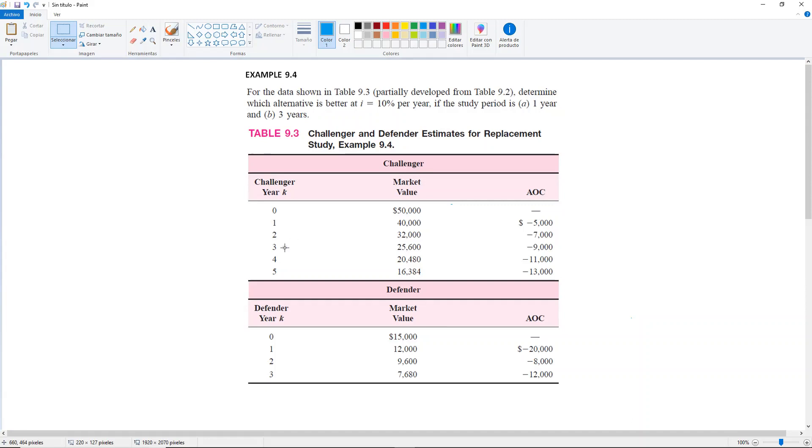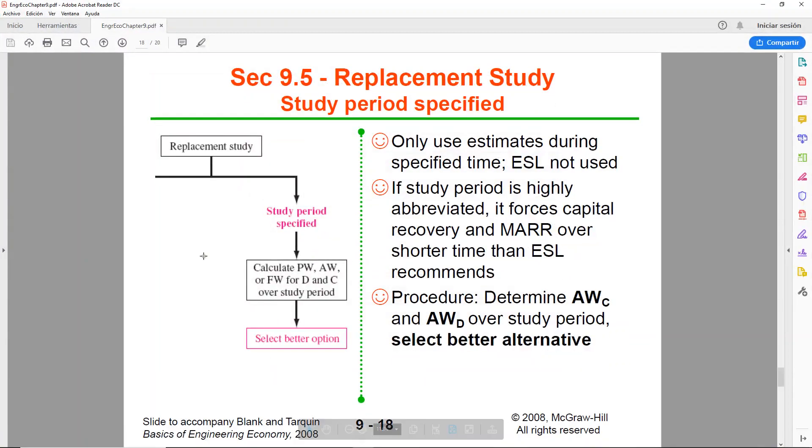and B, three years. This is a second method that we can use to perform a replacement study with a specified study period.